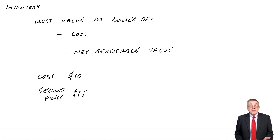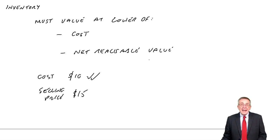I intend to sell them at $15, I appreciate I haven't sold them yet, they're in inventory, but I've paid $10, I'm going to sell them for $15. Well, you must value at the lower of the two, you must value them at $10.